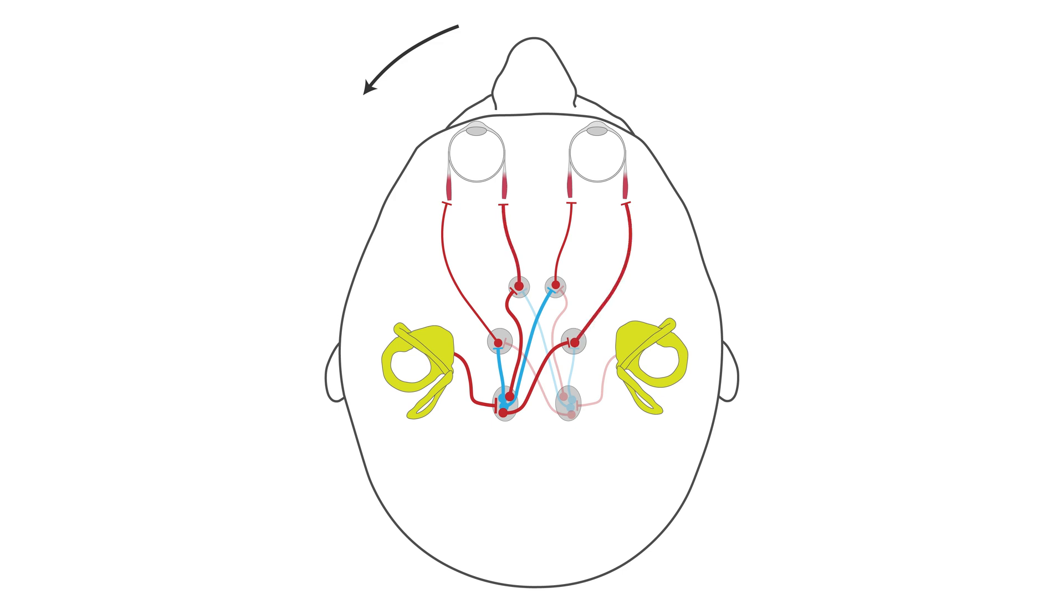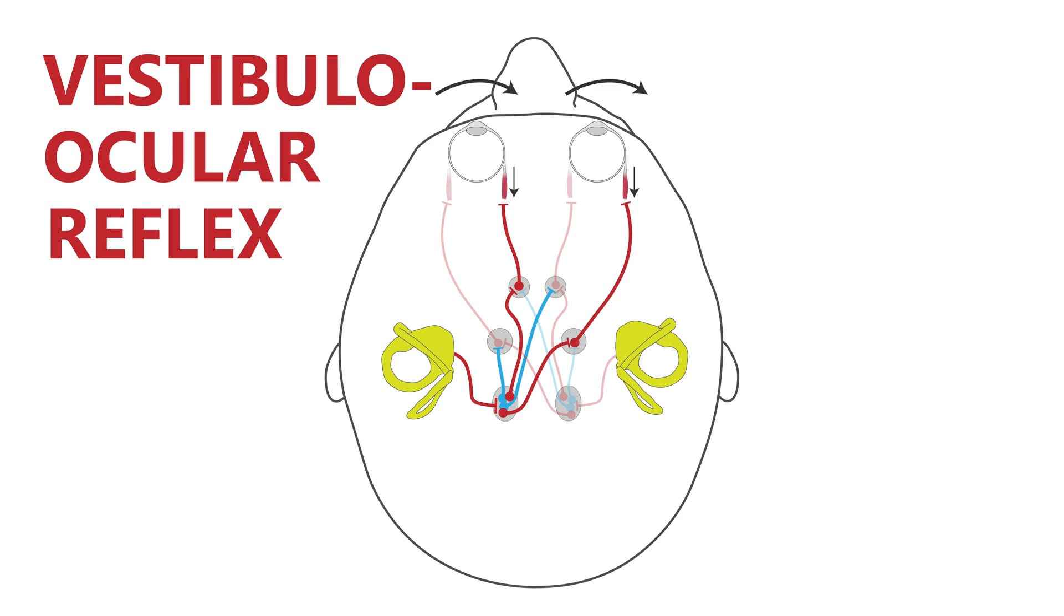These neurons will send more spikes, and therefore these muscles will contract. And the remaining neurons will send less spikes, and the corresponding muscles will relax. And so the eyes will turn. And that's the vestibulo-ocular reflex.